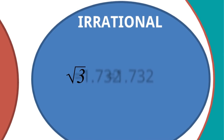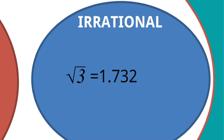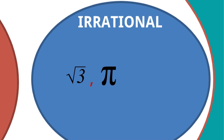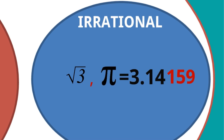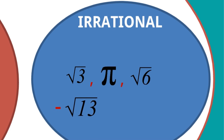For irrational numbers, consider root 3. You might say 1.732 means 1732/1000, which looks like p/q, but actually it is not — because 1.732 is only the approximate value. Root 3 is actually 1.73205081... and so on, so we cannot write it in p/q form. Similarly, pi is approximately 3.14, but actually it is 3.14159... and so on — we cannot write pi in p/q format. Likewise, root 6 and minus root 13 are all irrational numbers.